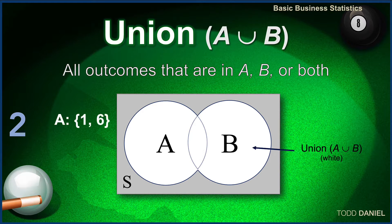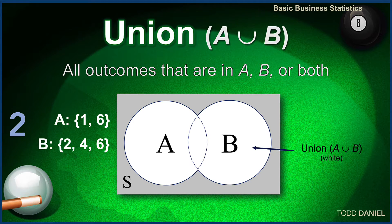Event A is rolling a 1 or a 6. Event B is rolling a 2, a 4, or a 6. In other words, rolling an even number. What is the union of A and B? What is the overlap? Outcomes that are in both A and B.